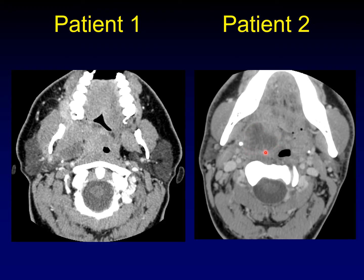Now, this is not a simple peritonsillar abscess. This one has extended through the superior pharyngeal constrictor muscle and into the parapharyngeal space. All of the parapharyngeal fat has succumbed to this abscess all the way out to the styloid process. So this is a complex peritonsillar abscess with involvement of the parapharyngeal space and destruction of all the parapharyngeal fat.